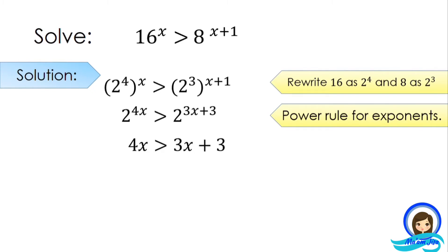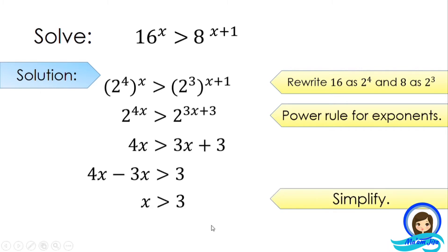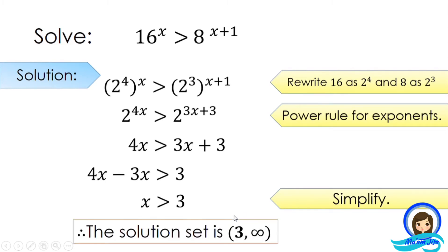Group similar expressions: 4x minus 3x is greater than 3. Transposing 3x to the other side gives x is greater than 3. Therefore, the solution set is from 3 to positive infinity. We use parenthesis, not bracket, since there is no equal to in the inequality symbol. Therefore, 3 is not included in the solution set.